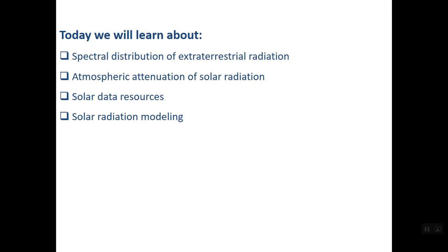Today we will learn about the spectral distribution of extraterrestrial radiation — meaning what wavelengths correspond to each part — atmospheric attenuation or the effect of atmosphere on solar radiation, what solar data resources are available, and we will start a short topic on solar radiation modeling that will be continued in the next lesson.